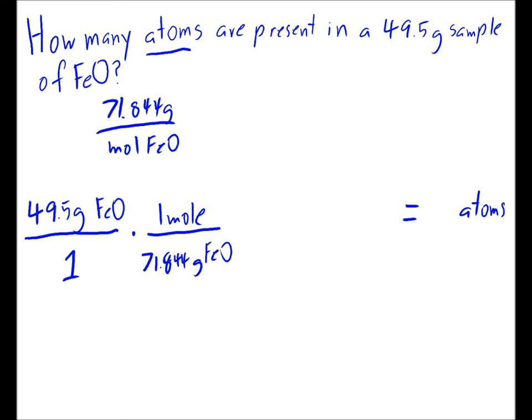There are 71.844 grams of FeO in every one mole. I'm going to get a little premature and cross these units out right now. We can see that we will have less than one mole. We're going to do 49 divided by about 71. We're not done yet, though. We don't want our answer in moles. We want it in atoms.